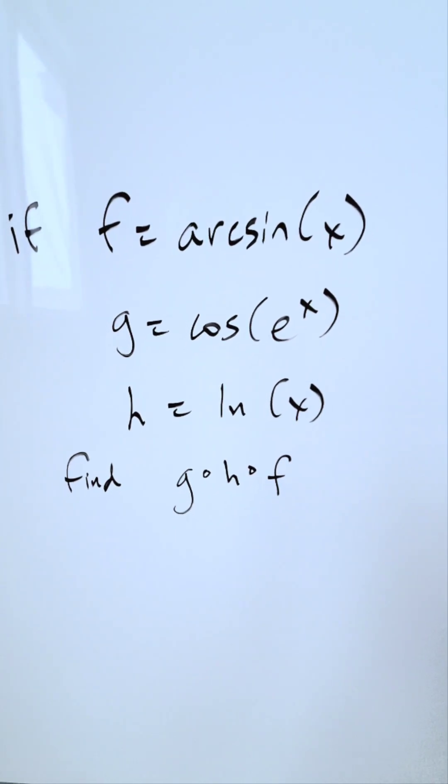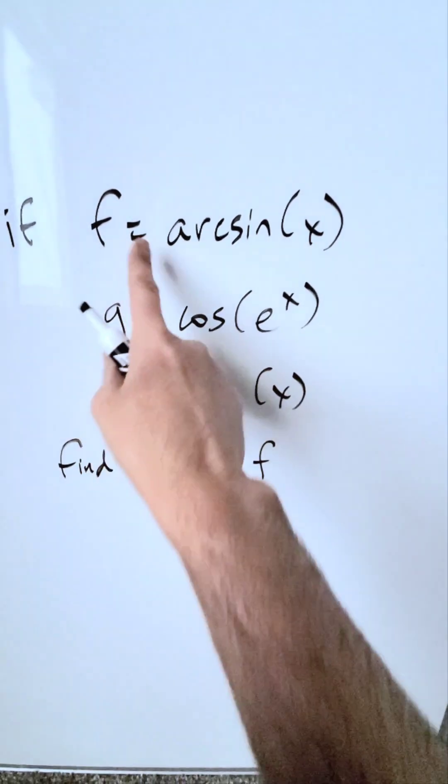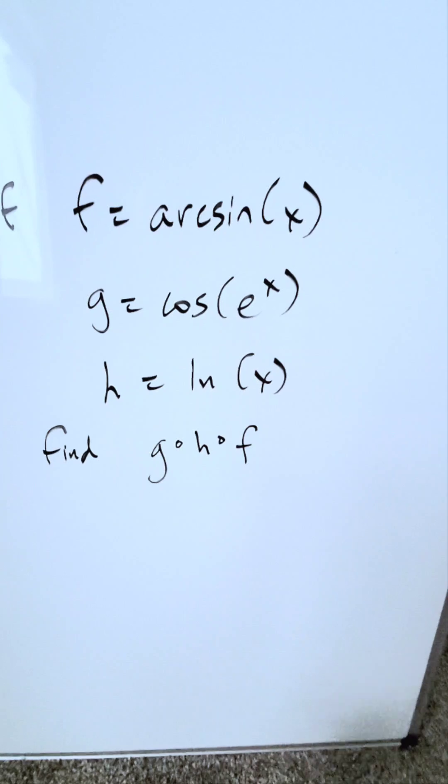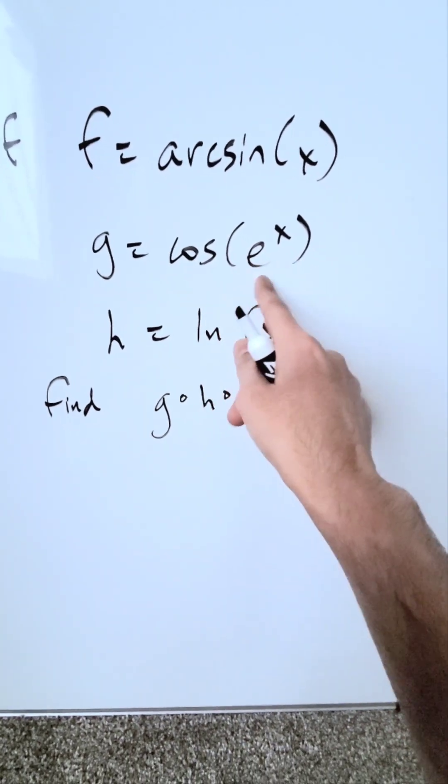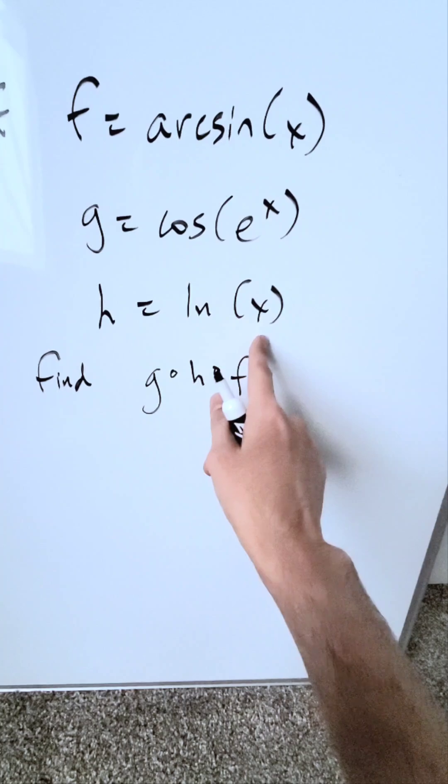Let's examine this question on composite functions. Function f(x) is arcsin(x), the inverse sine. The g function is cos(e^x), cosine of exponential. The h function is ln(x), natural log.